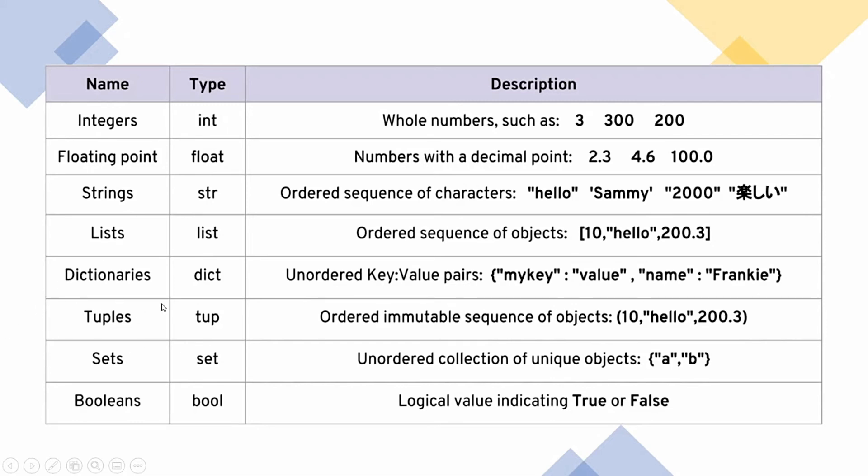Then there comes tuples. Now, tuples are another ordered sequence of objects, like list. But there is one difference between list and tuples. In the list, we can change these things, these numbers, these sequences. Like we can change hello and we can put anything else over here. But in tuples, they are immutable. You can't change them. You can't just replace it. You can add things in it, but you can't replace it. That's the only difference. And tuples are comprised inside small braces, parentheses.